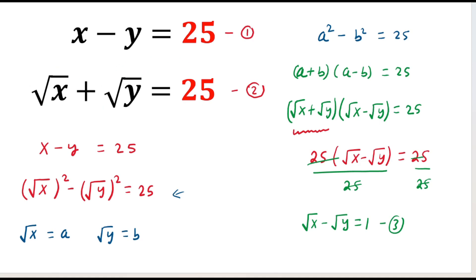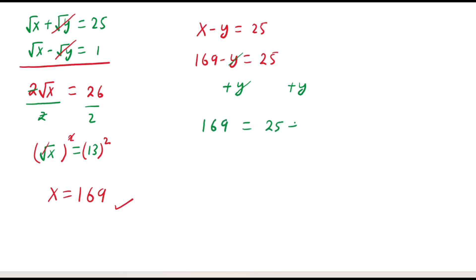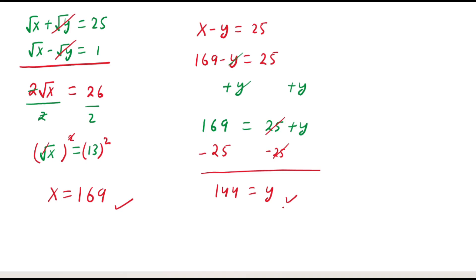Now look at equation number first: x minus y equals 25. Replacing x with 169, we get 169 minus y equals 25. Adding y to both sides, the minus y and plus y cancel, giving 169 equals 25 plus y. Subtracting 25 from both sides, the 25s cancel and 169 minus 25 gives 144, so y equals 144.